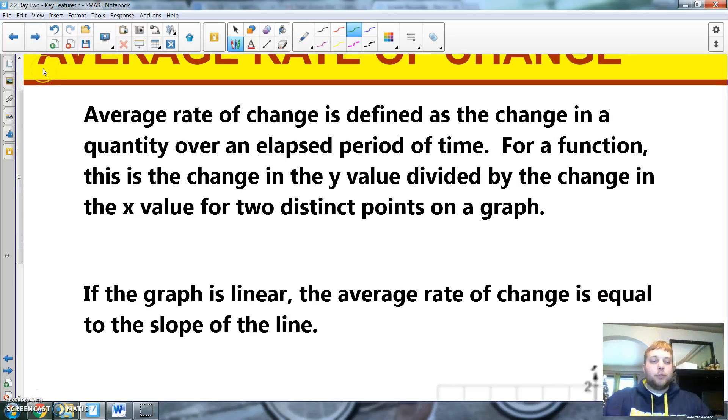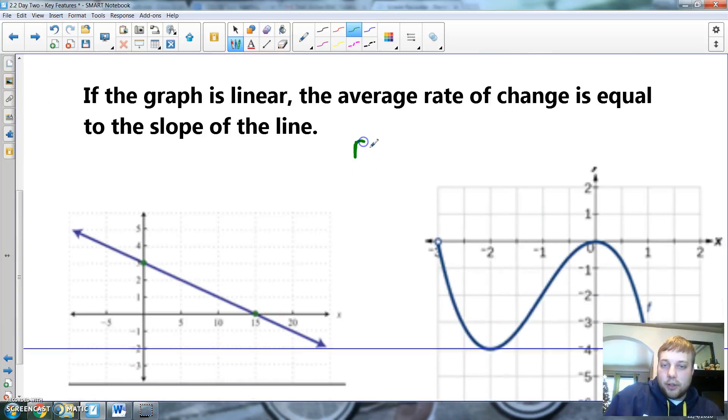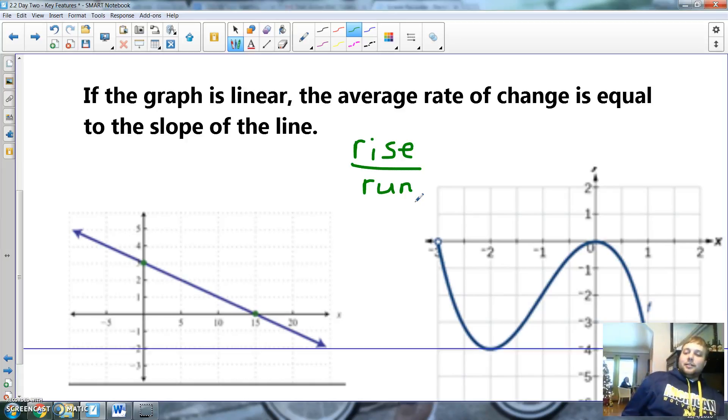Average rate of change, and we'll be done here. We'll do a couple sample problems. We'll be done. Average rate of change is defined as the change in the quantity over the elapsed period of time for function. This is the change in the y value divided by the change in the x value for two distinct points in the graph. Just remember this. Rise over honey. Rise over run. See? How long has it been since you've done that? Man. College. Rise over, that'll be nice. You should say, every day, honey. You do this every day. This math stuff, you do every day. I have to do it every day. Here we go.